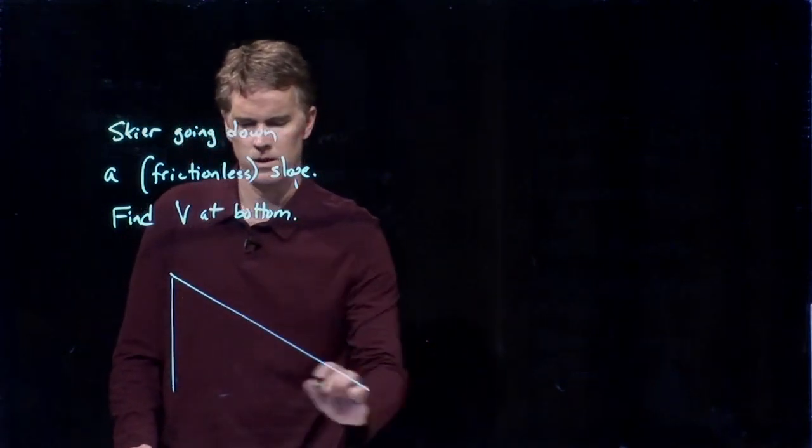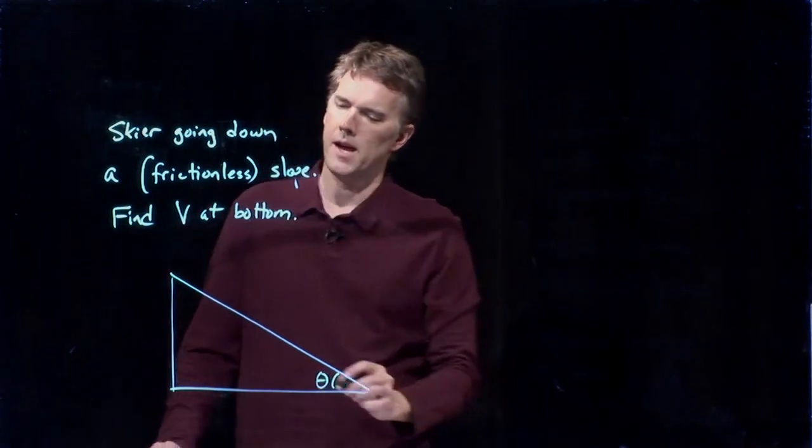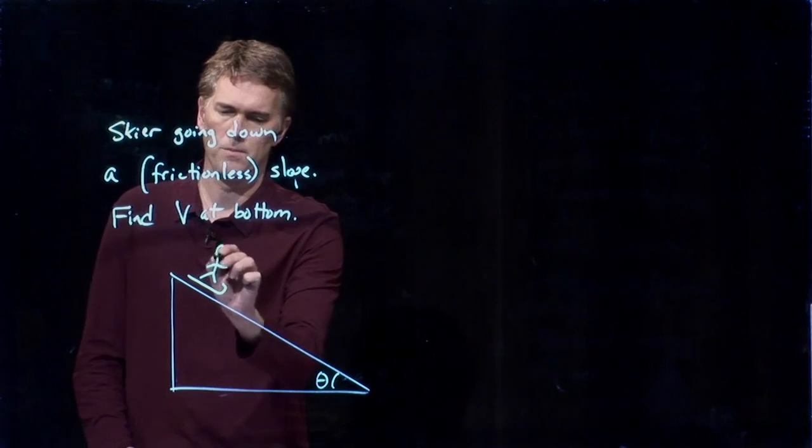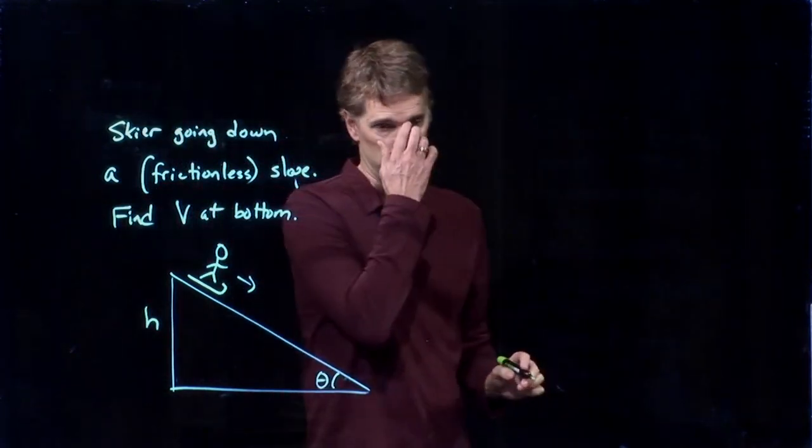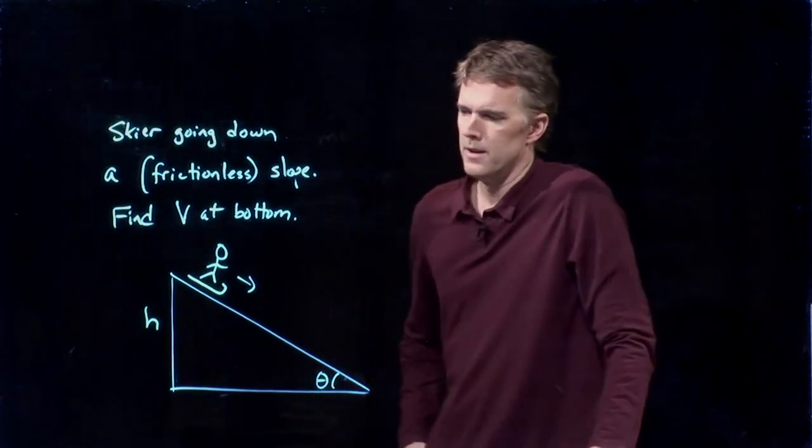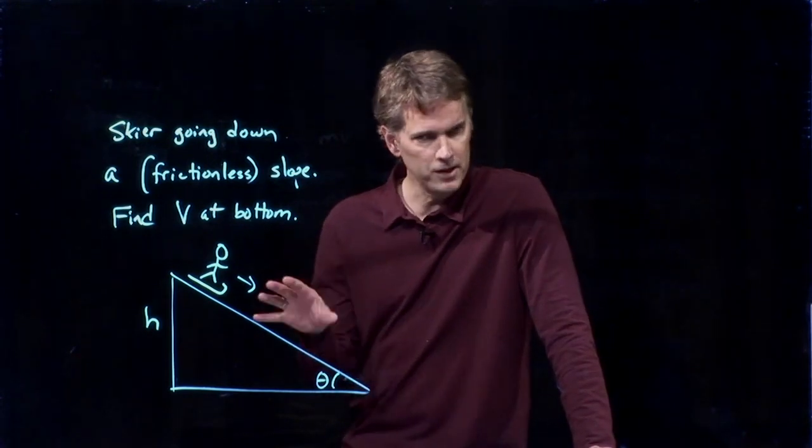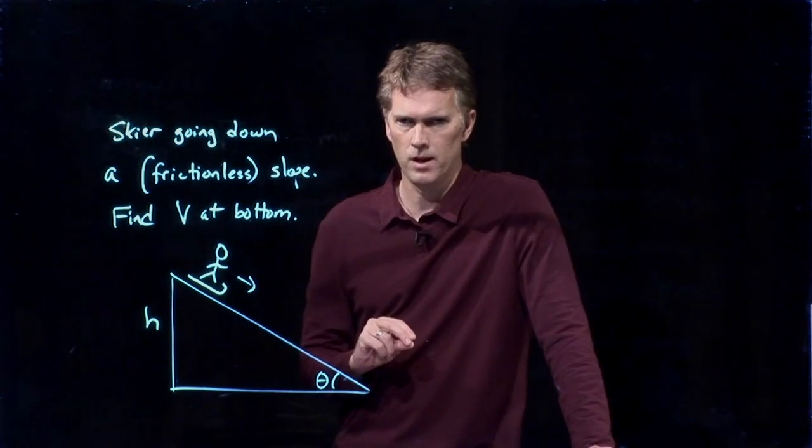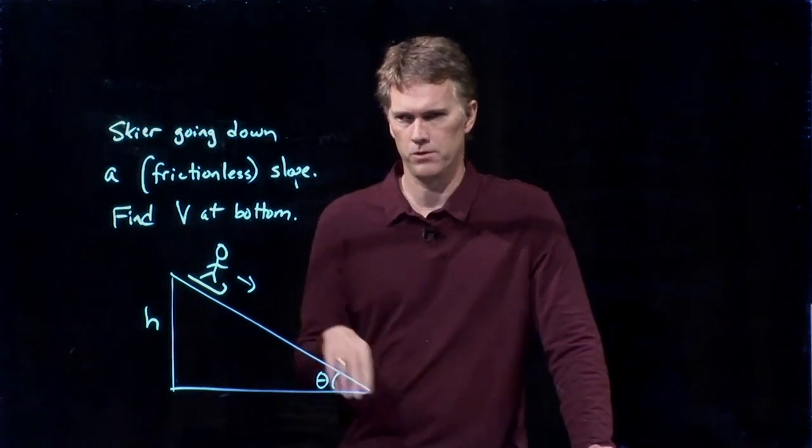Alright let's draw a picture of what we're talking about. Here's our slope, we've got an incline here of angle theta and now we've got a skier that is going down the slope and we'll say that they start at a height h. Now we know a little bit how to solve these problems right. We've done these problems before with kinematic equations. Let's see if we can attack it from that point of view to start.